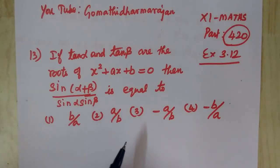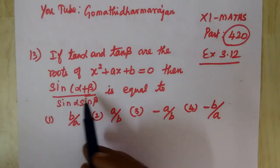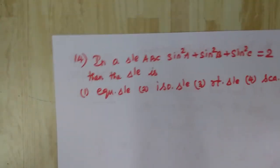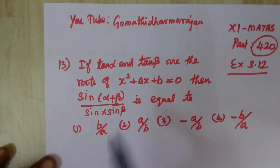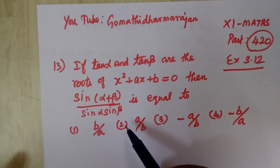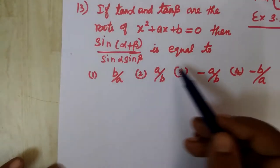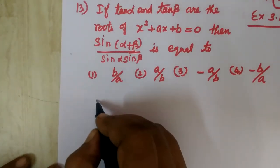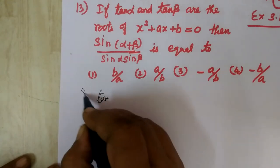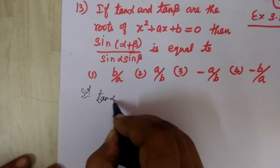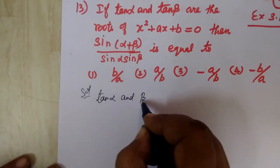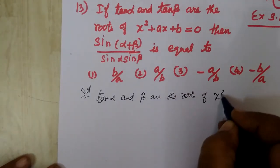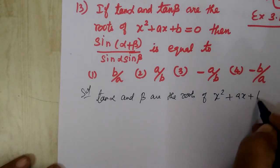Part number 420. Here you are given tan alpha and tan beta. Question number 14: if tan alpha and tan beta are the roots of x² plus ax plus b, then find the value of this expression.